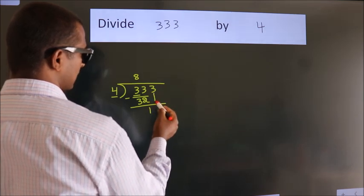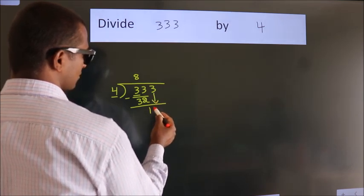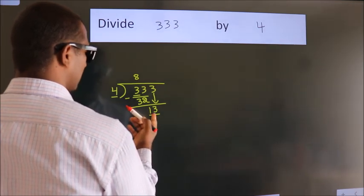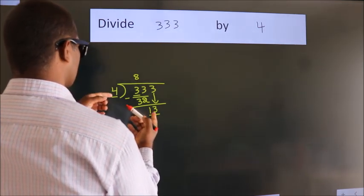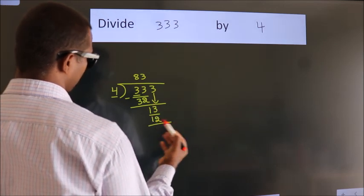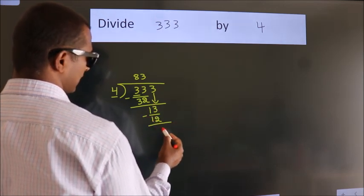After this, bring down the beside number. So, 3 down. So, 13. A number close to 13 in the 4 table is 4 times 3 equals 12. Now we subtract. We get 1.